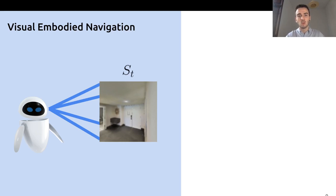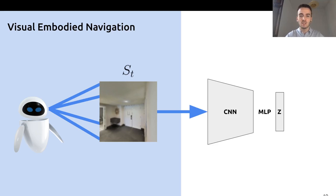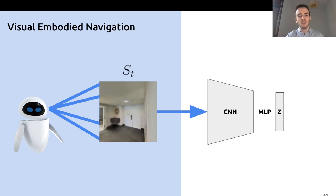The most popular approach for extracting representations from images is to append a convolutional neural network to extract image features, followed by a fully connected head on top for extracting the representation or embedding of that image. The question and challenge is: how should we train these neural networks and with what criteria? What representations do we aim to learn from images that represent points in space in a 3D environment?